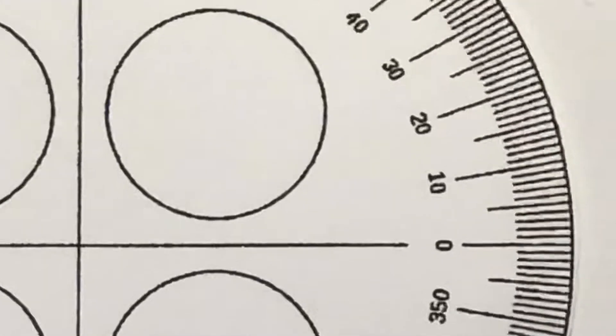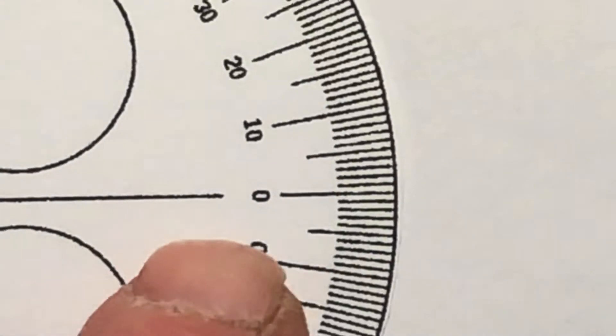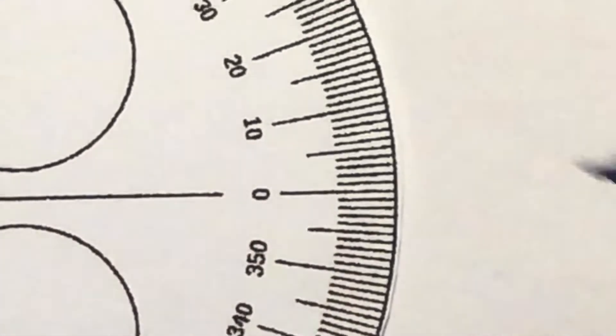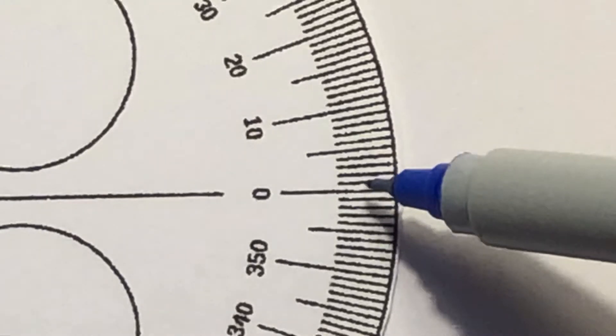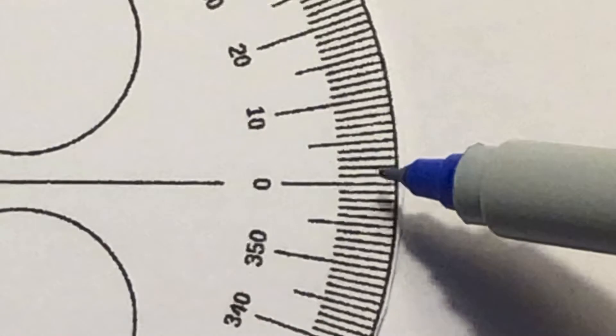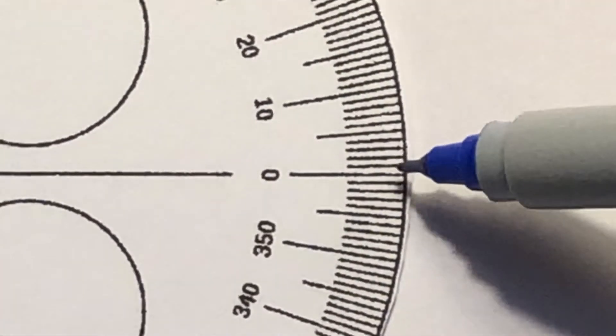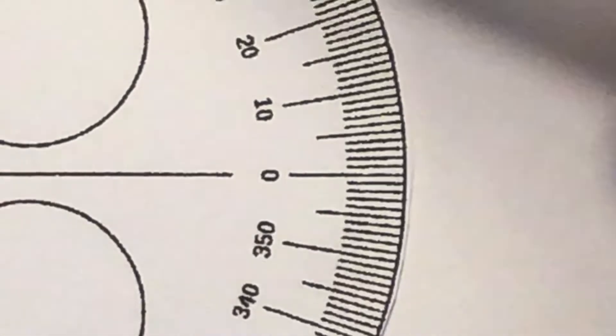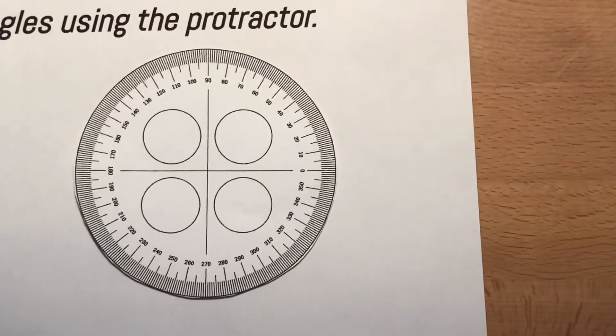So if I zoom way in, let me get that way, super close up. All right, so here's zero, and I can see that one little tick up there, that is one degree. That is what one degree is. So one degree is 1/360th of a circle because each one of these tiny little marks, there's 360 of them all the way around this circle.